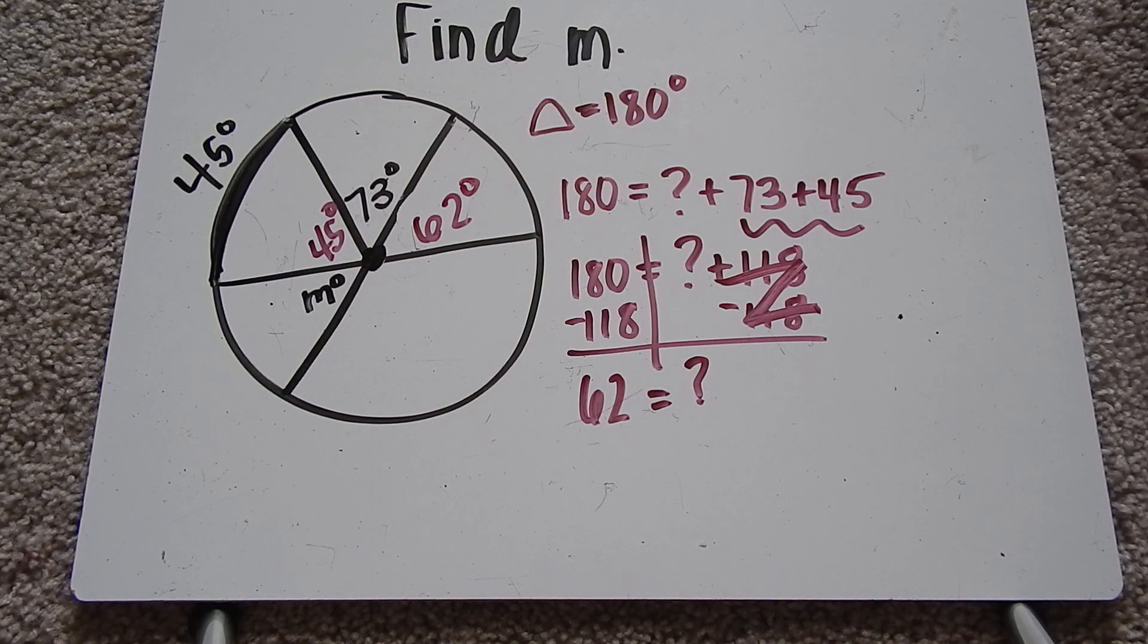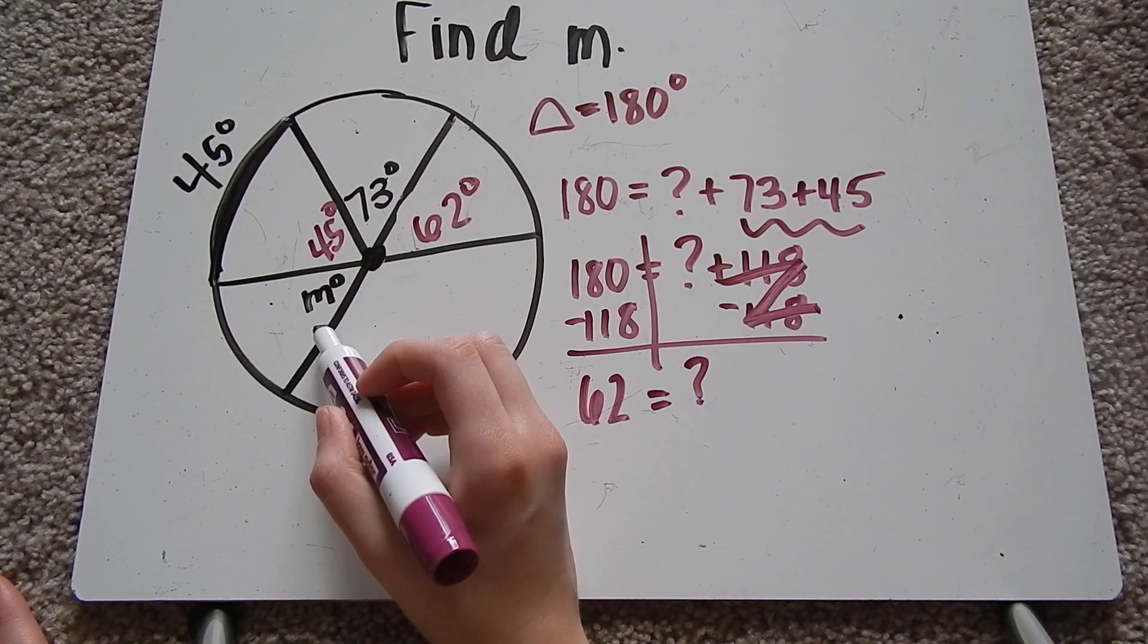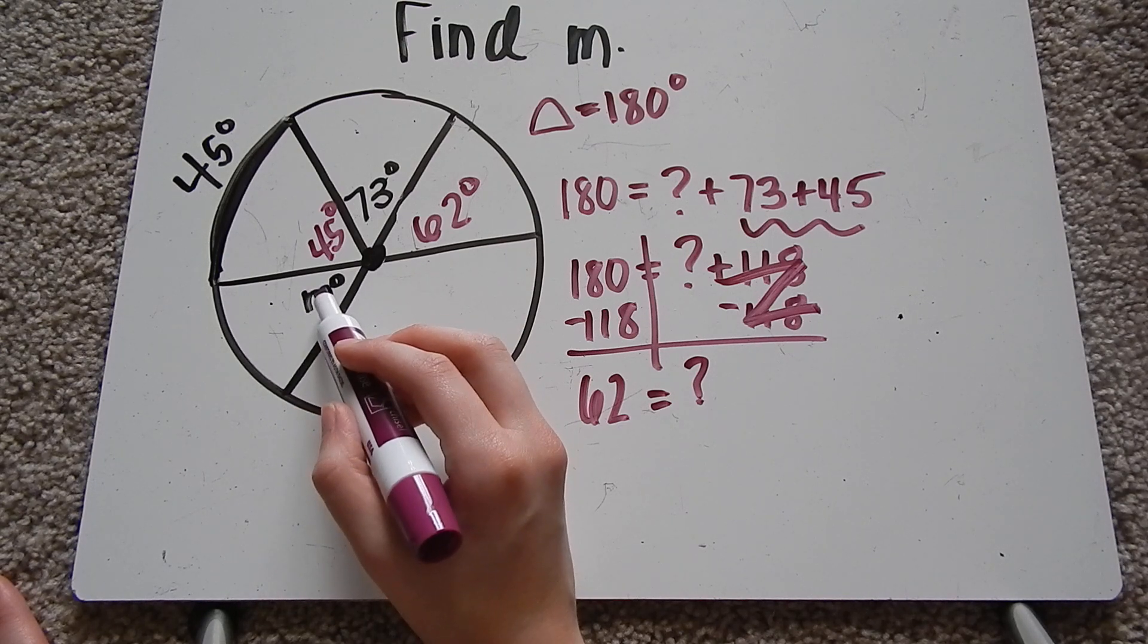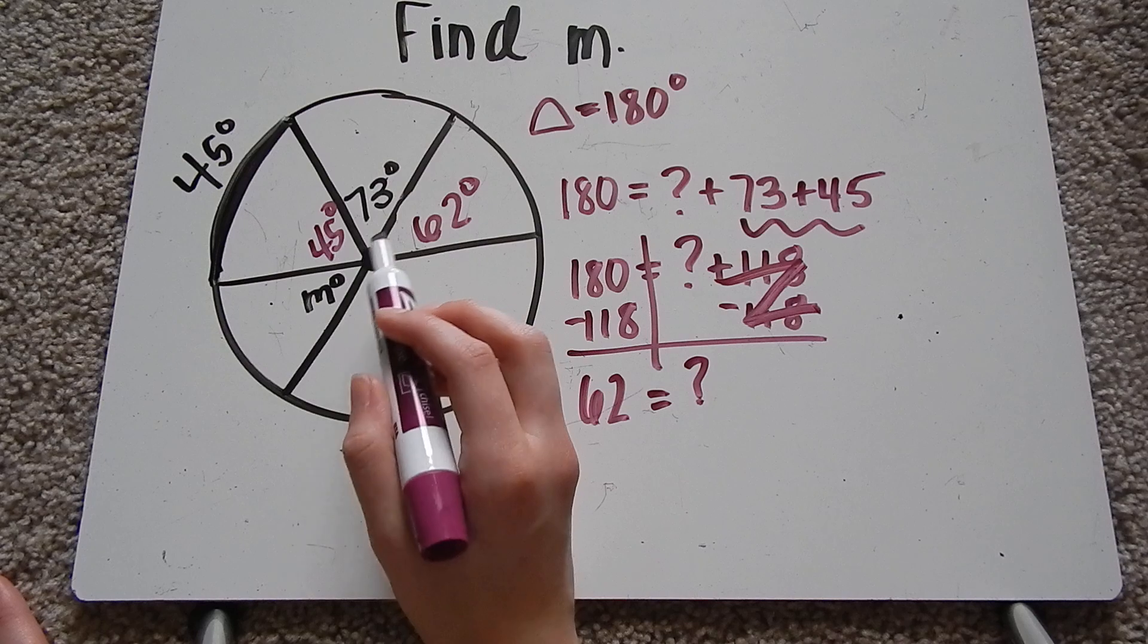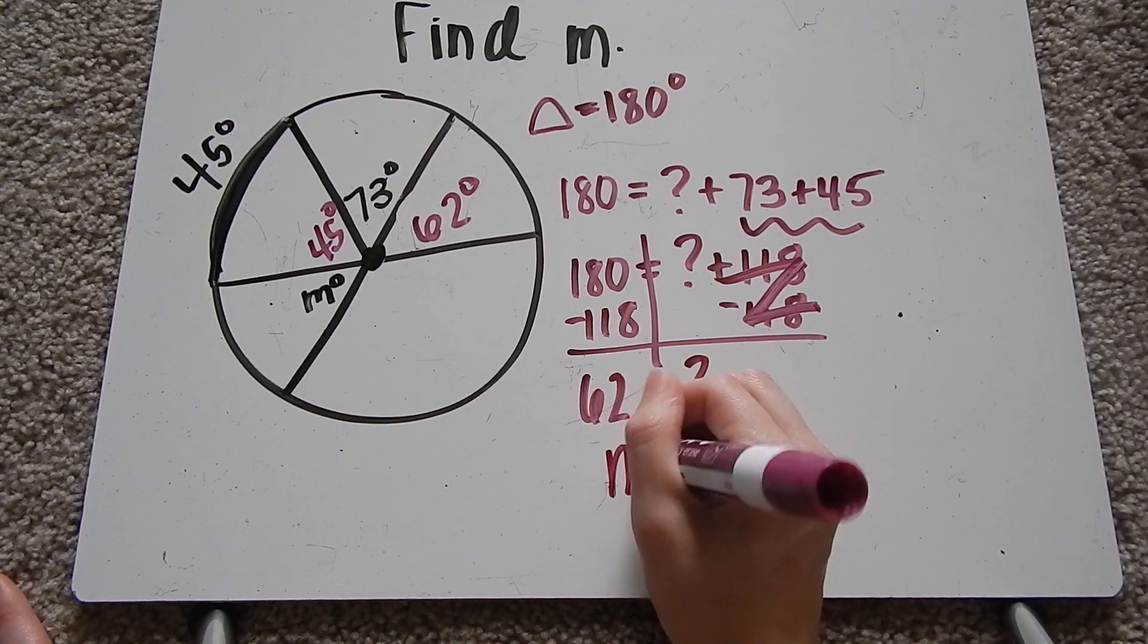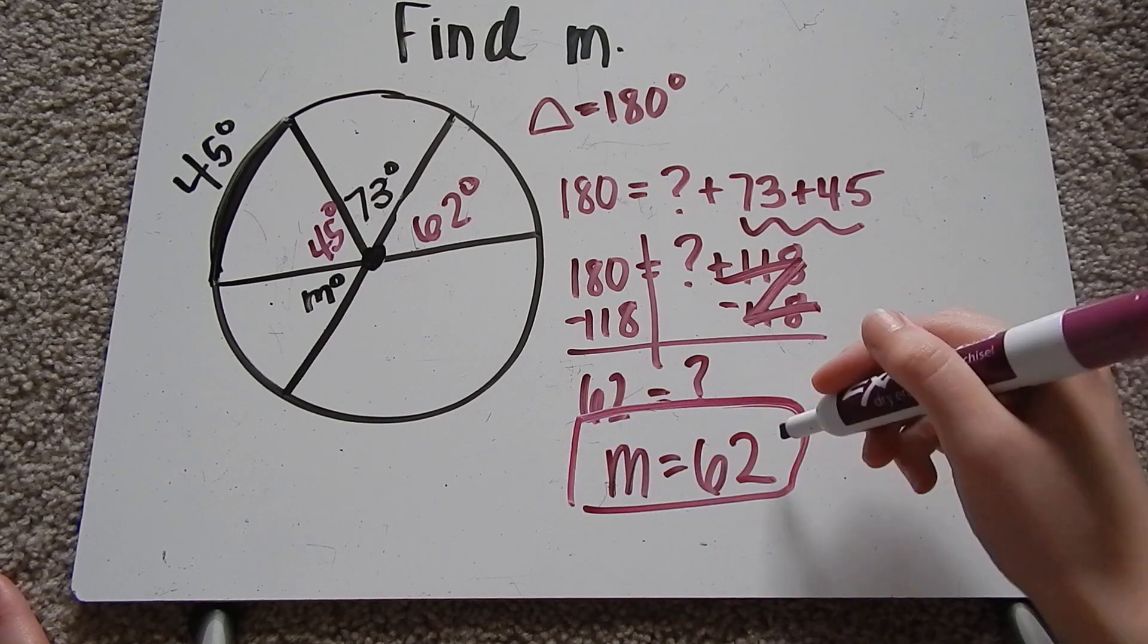Now that I know that's 62 degrees, I can figure out m. And this goes back to the example problem we just did. I know m because these are vertical angles. Vertical angles are equal. And so m equals 62 degrees.